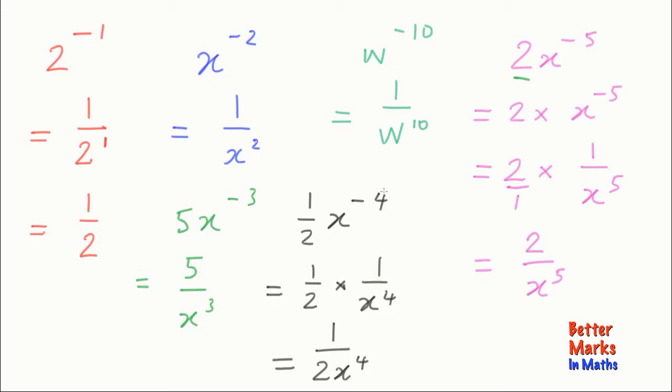So anything with a negative power will become 1 over that same thing to the positive of that power. And depending on what number you're multiplying it by, as to where those two numbers end up or what that number will become.